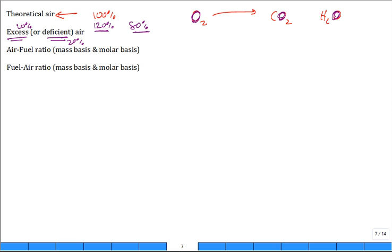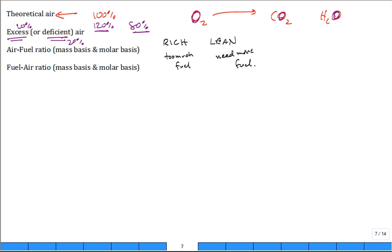So 120% theoretical air equals 20% excess air, and 80% theoretical air equals 20% deficient air. There's also the concept of rich and lean. If your engine is running rich, you have too much fuel. If it's running lean, it's too much air or not enough fuel. It's often beneficial to run lean versus rich: running rich throws expensive hydrocarbons out the tailpipe, while running lean gives lower peak temperatures, less NOx emission, and complete combustion with complete heat release.